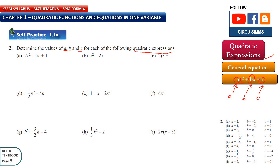Question 2a: 2x squared minus 5x plus 1. In front of x squared you have a, so a is 2. In front of x you have negative 5, so b is negative 5. And the constant is c, so c is 1. You just compare the coefficients with the general equation ax squared plus bx plus c. So a is 2, b is negative 5, and c is 1.